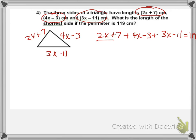So, I have 2X plus 7 plus 4X minus 3 plus 3X minus 11. And all of that equals 119. My like terms are 2X, 4X, and 3X. That's 10X. My other like terms is 7 minus 3, which is 4, minus 11. Which would be a negative 7. Equals 119.